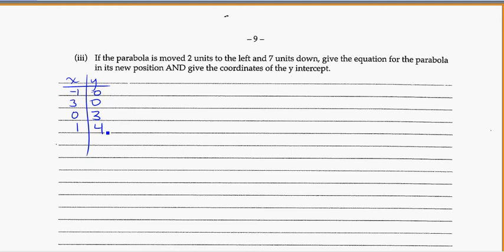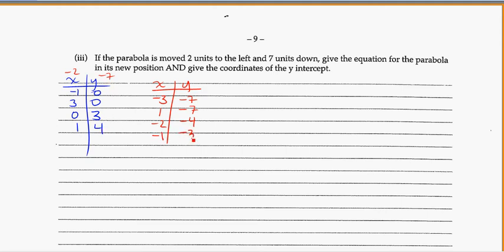Our new points: negative 1 minus 2 gives negative 3, and 0 minus 7 gives negative 7. Then 3 minus 2 is 1, and 0 minus 7 is negative 7. Then 0 minus 2 is negative 2, and 3 minus 7 gives negative 4. And 1 minus 2 is negative 1, and 4 minus 7 is negative 3. Those are all new data points we can put into the calculator.